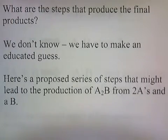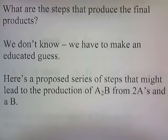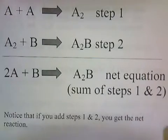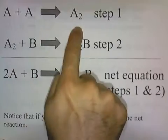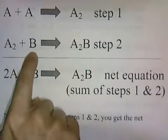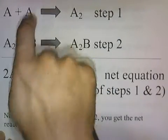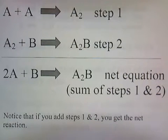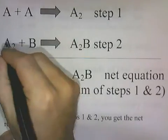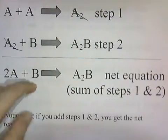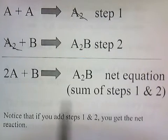What are the steps that produce the final products? We don't know — we have to make an educated guess. Here's a proposed series of steps that might lead to the production of A2B from two A's and a B. Step one: A plus A gives A2. Step two: A2 reacts with B to produce A2B. If you add these two reactions together, you get the net equation. The A2 on the left and on the right cancel, giving 2A plus B yields A2B.